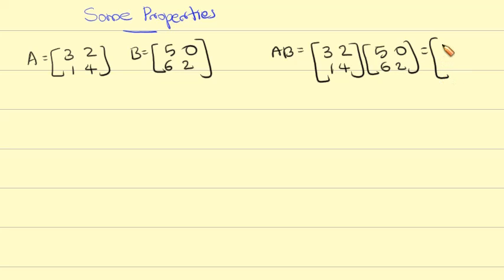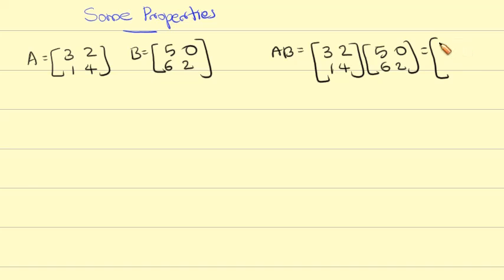Here is a random matrix. This random matrix is A times B, which equals 3, 2, 1, 4 into 5, 0, 6, 2. That equals 27, 4, 29, 8.